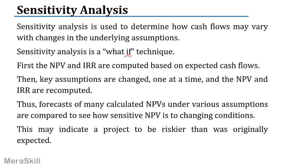First you compute the NPV and IRR on expected cash flows. Then you change the key assumptions, but one at a time — not all together, one at a time — and see the NPV and IRR again. Thus forecasts of several NPVs under various assumptions are compared to see how sensitive your result is. A small change in the financing option, the price of raw materials, or the discount factor can have a huge impact on the NPV.